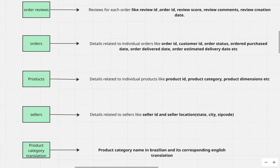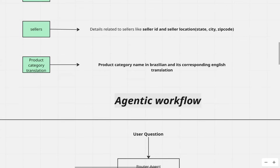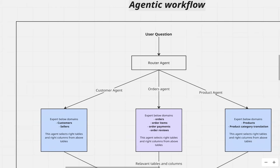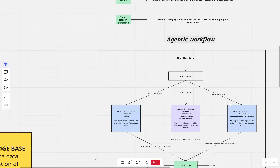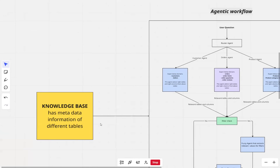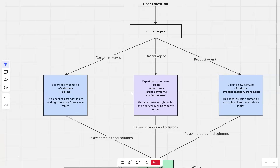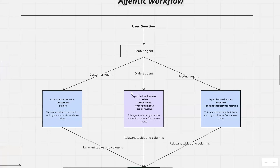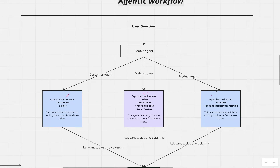So now let's quickly go through the agentic workflow. This whole agentic workflow is powered by something called a knowledge base. The knowledge base has the metadata information of different tables. What this metadata is and how we build this knowledge base, we will see in part 2 of the video. In this text-to-SQL agent, there are three powerful agents: the customer agent, the orders agent, and the product agent.